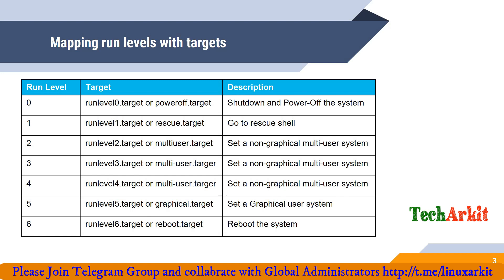In previous versions like RHEL 6 or RHEL 5, we had run levels. In the new version we have targets. How these targets are understood, what the targets do, and how they map to previous comparisons — the run levels were 0 to 6. In this new version, like Red Hat Enterprise Linux 8, we have different levels called targets.